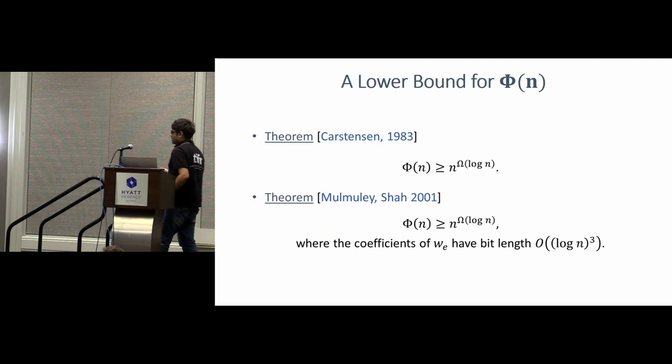The next question is, is this tight? And the answer is yes. So in 1983, Carstensen showed us matching lower bound of n raised to log n. And 18 years later, Mulmuley and Shah showed the same lower bound. It was inspired from Carstensen's work, but their graph, so a lower bound means they presented an explicit graph. A graph for each n, and their graphs were designed in such a way that you could represent the edge weights with polylogarithmic many bits. So when I say designing the graph, it means not just the graph, but also the linear weight functions on the edges. And their linear weight functions could be expressed in this way.